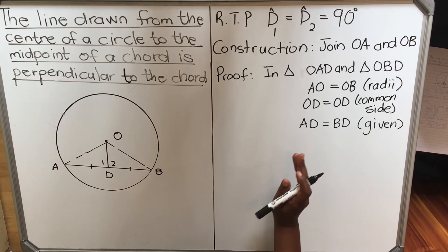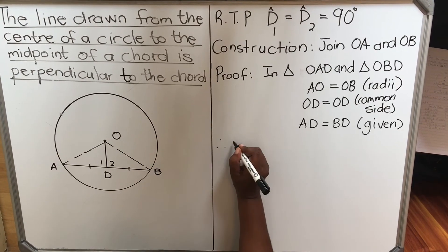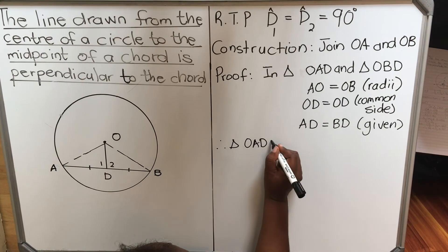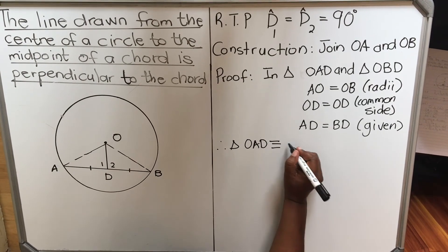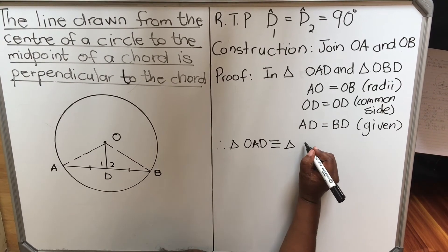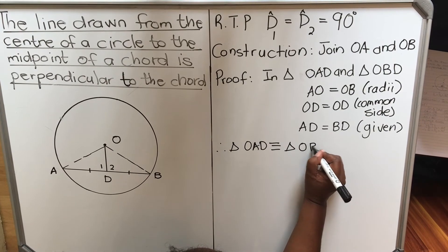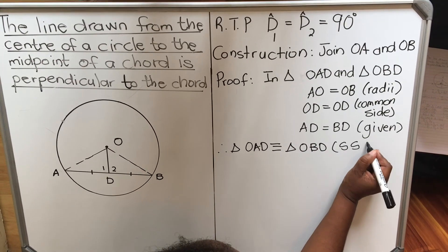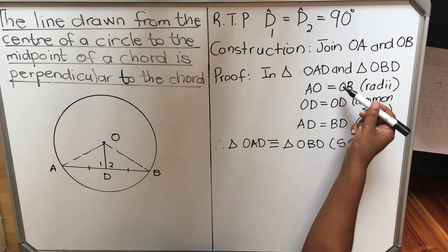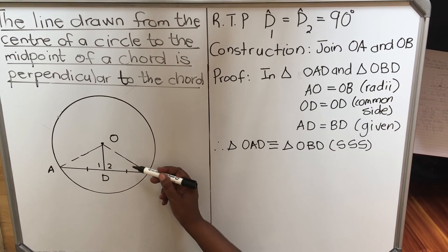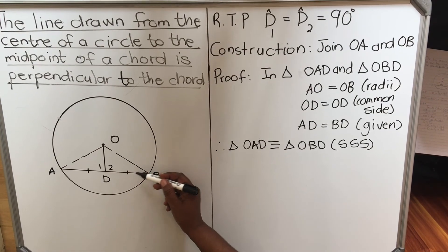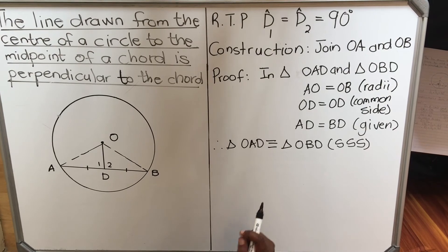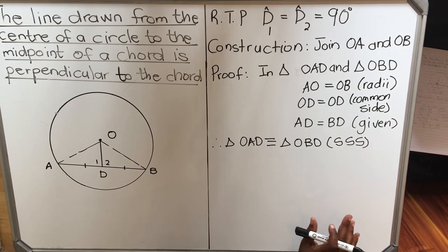Then you can say, therefore, triangle OAD is congruent to triangle OBD. And the reason? It's side, side, side. These sides are all equal. You could have used side included angle side. These angles are also equal because they're angles opposite equal sides. But if you have one like this, it's fine.